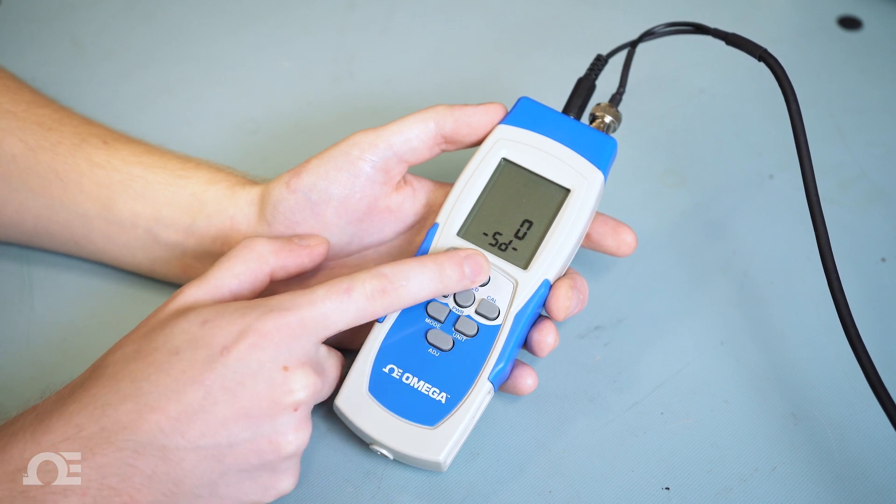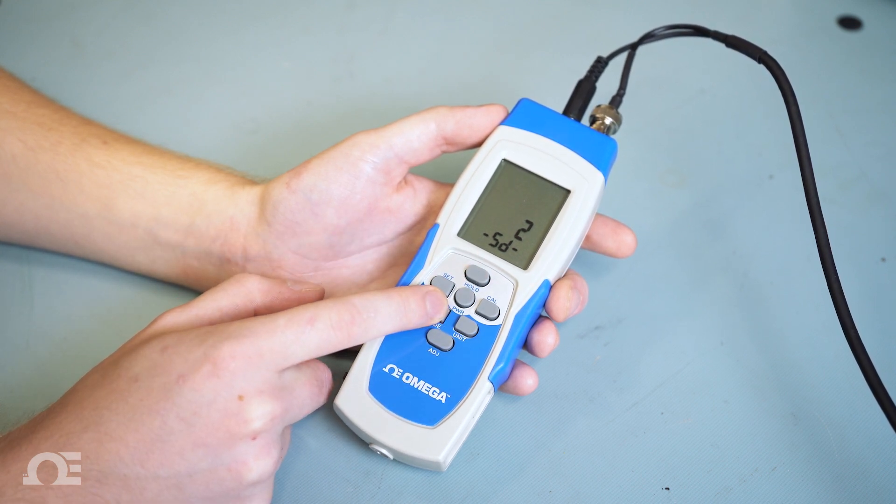Zero is for manual data logging points. Then press and hold the mode key until SA appears.